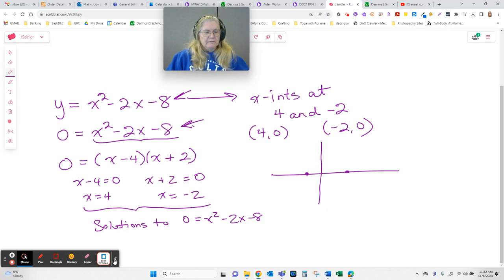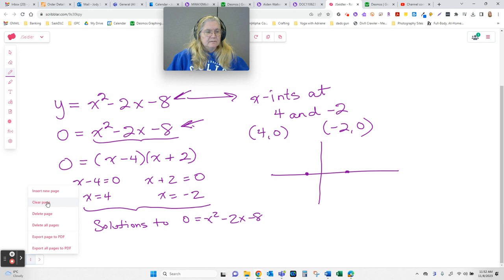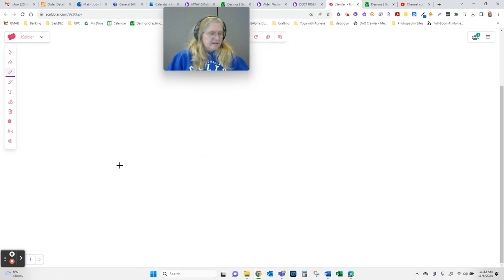So what if, let's clear my page. What if it doesn't factor nice, right? What if, and I'm going to cheat and find one. Because if I make it up, y equals 3x² + 6x + 1.